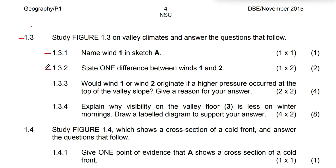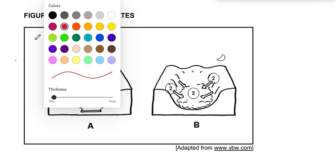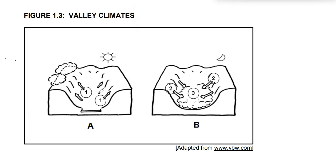Question 1.3.2: State one difference between Wind 1 and Wind 2. Wind 1 is anabatic wind — it occurs during the day, as you can see the sun in the diagram. During the night there is no sun. Wind 2 is a katabatic wind, as indicated by the moon symbol, meaning it occurs during the night — these are down-slope winds.